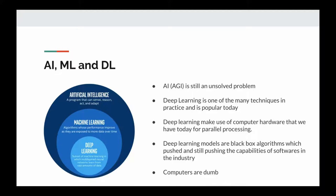AI or AGI is still an unsolved problem. Deep learning is one of many techniques in practice and is popular today because of GPU optimizations and computer hardware support. Deep learning models are black box algorithms — we do not understand what's happening within them, but somehow they manage to produce useful results. These algorithms have pushed and are still pushing the capabilities of software in the industry. Currently these are the best approaches we have, though we may come up with better algorithms in the future.